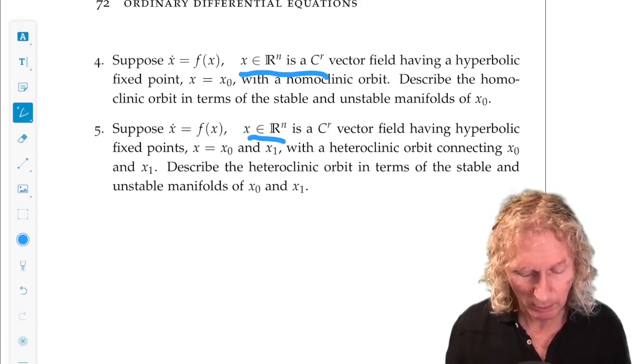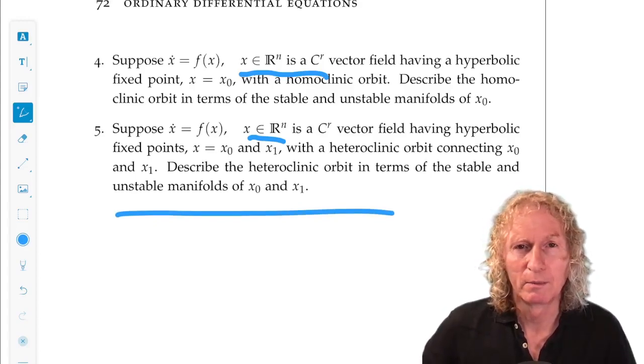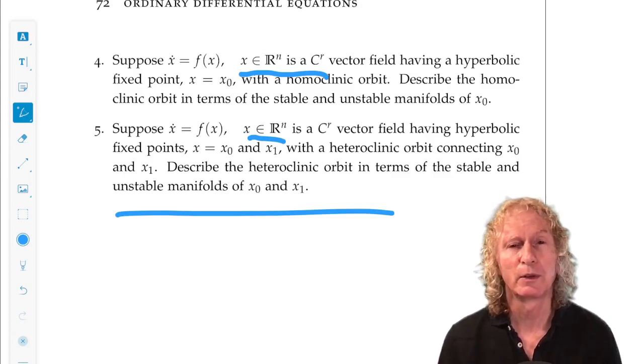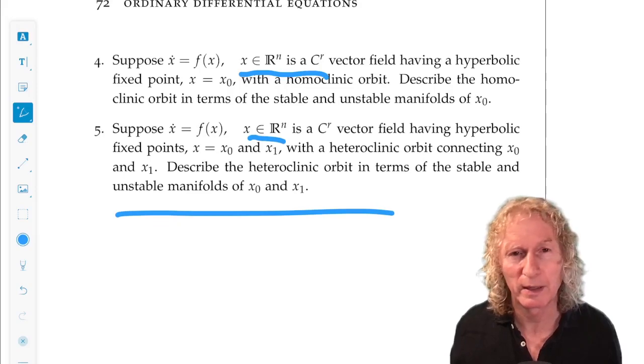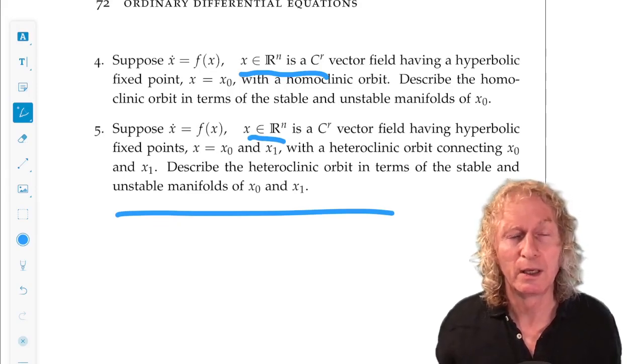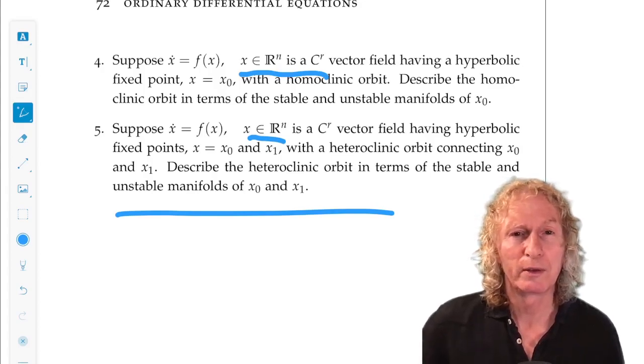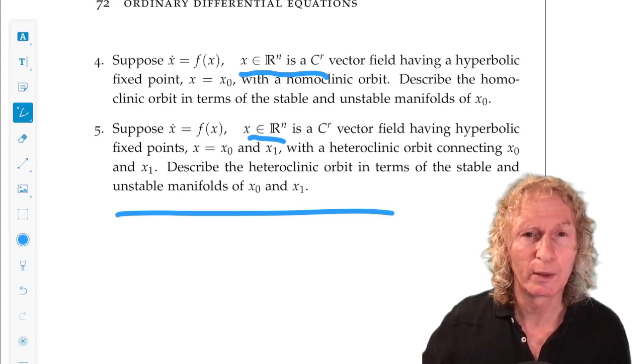Similarly, for heteroclinic, there's the obvious modification. So, that's how we're going to. So, when we look at examples, we're going to look at the equilibria. We're going to find the stable and unstable manifolds. And we need to understand the nature of the homoclinic orbits and heteroclinic orbits in terms of those stable and unstable manifolds.